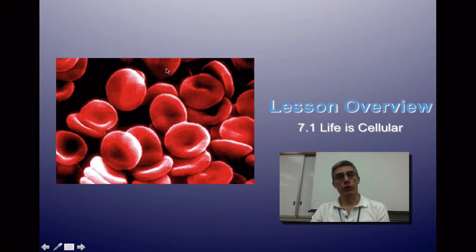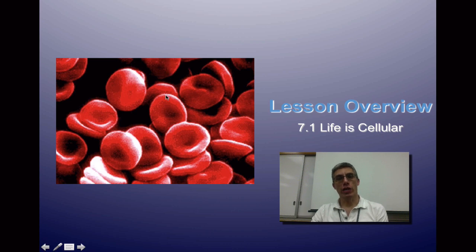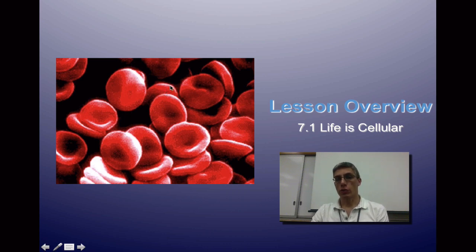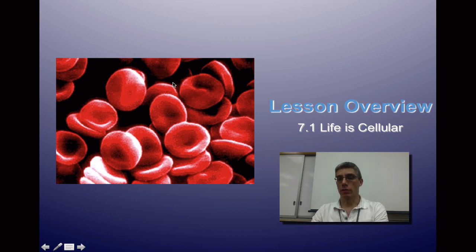Welcome back. This is our very first screencast for Chapter 7 and we're going to be looking at cells as we make our way through this chapter. We're going to break Chapter 7 into three sections. This first section covers cell history, the difference between eukaryotic and prokaryotic cells, and a bit about microscopes. Section 7.2 will focus on cell structure and 7.3 on cell transport.